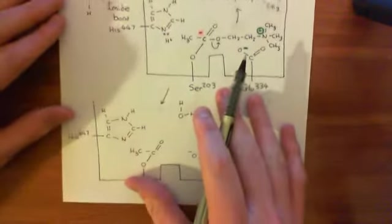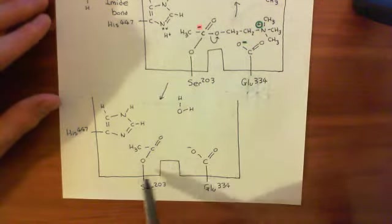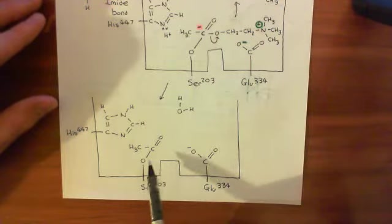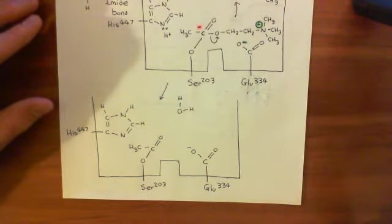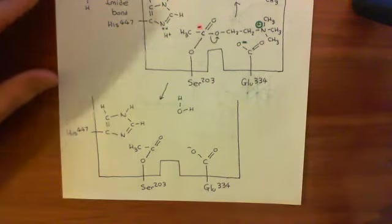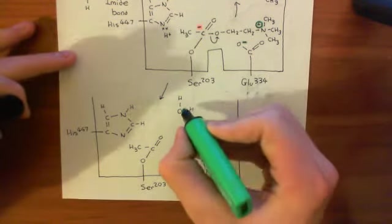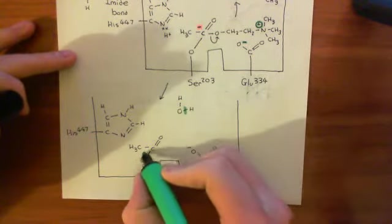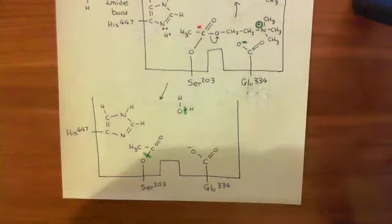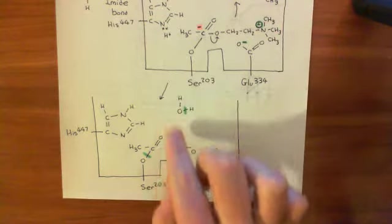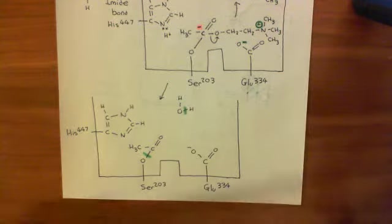And now what we've got is an ester link here that's easier to break just by a water molecule coming in than was the ester link between the acetate group and the choline. So what will happen is basically you'll split this water here. You'll split the carbon and the oxygen apart. You'll shove this alcohol group here onto this carbon to create acetic acid.